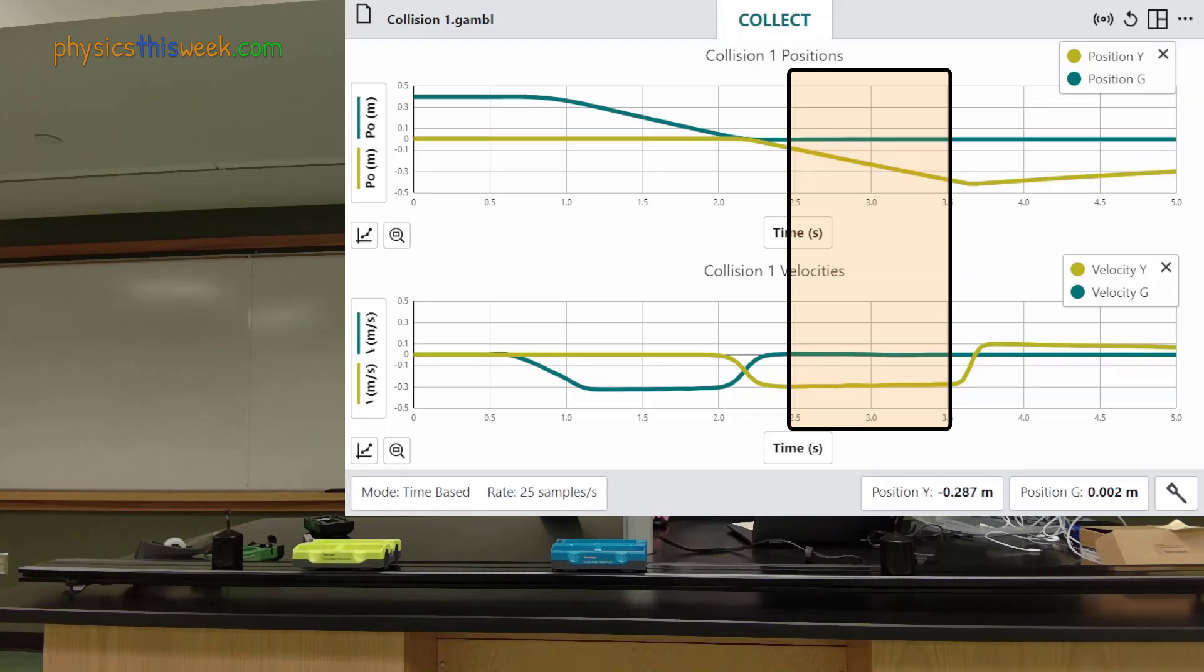After the interaction the green cart has nearly come to a stop. The yellow cart moves off with a speed similar to the original speed of the green cart.